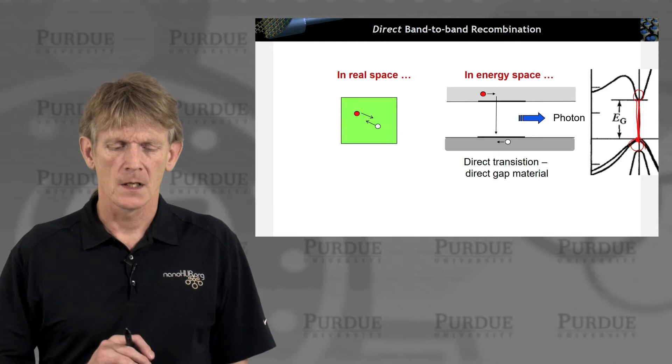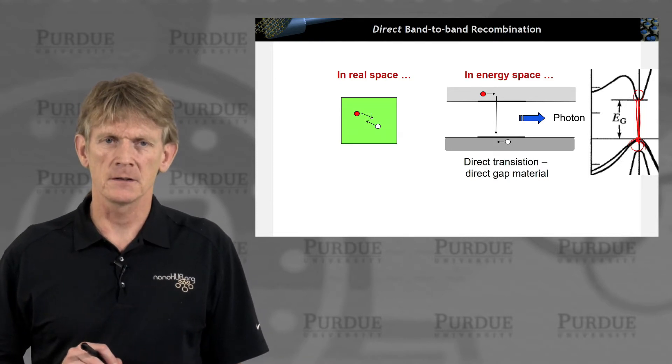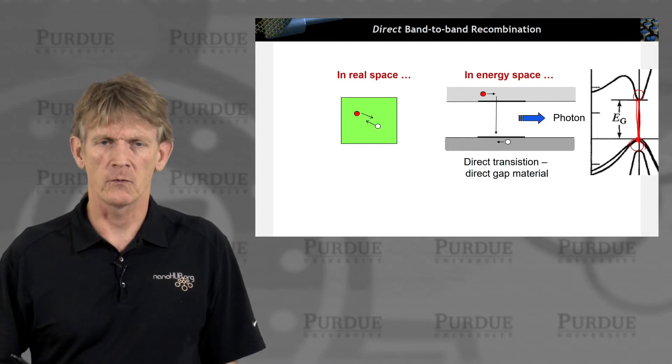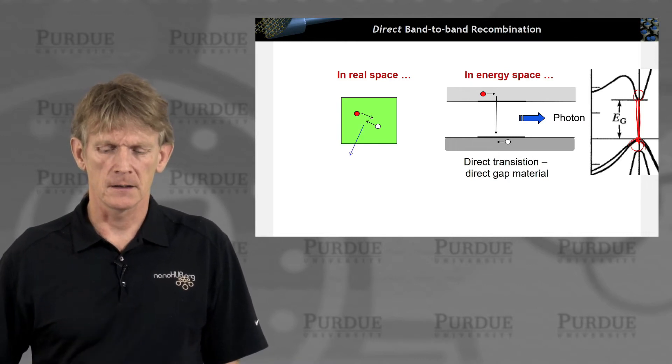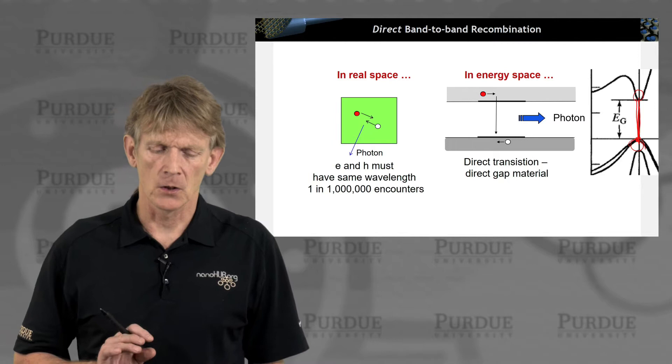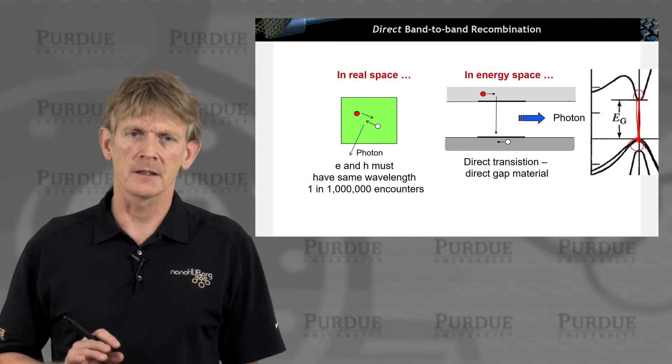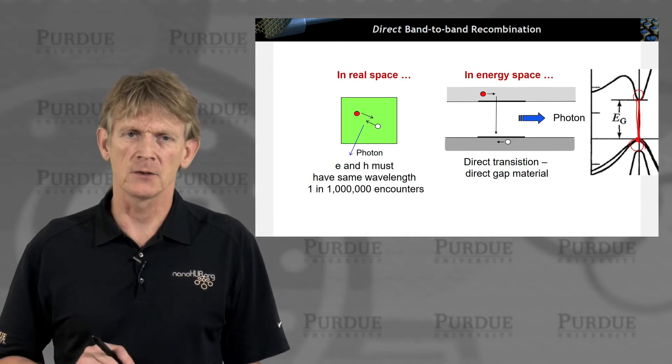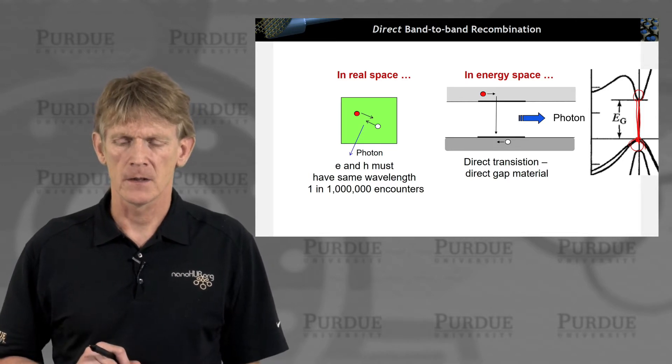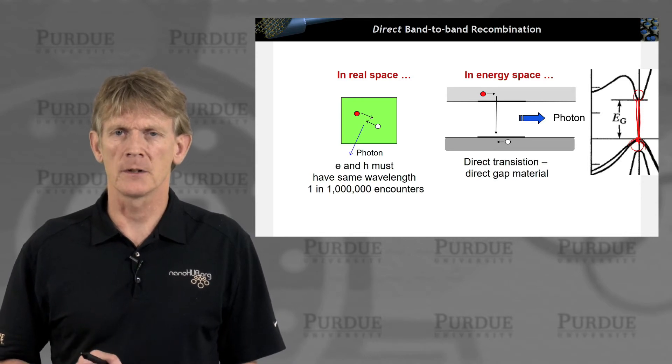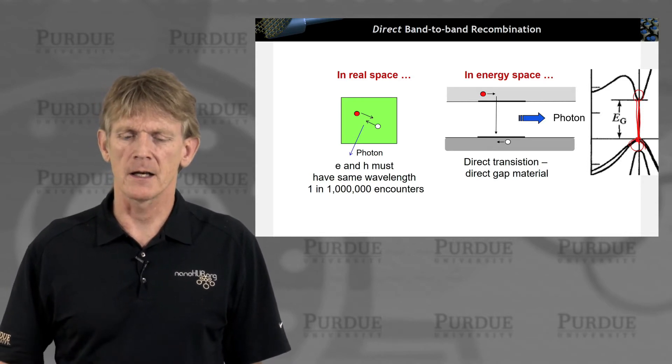In real space, it looks like this. There's an electron and a hole. They have to be spatially close, and they have to have the same type of wavelength in their quantum state, and they will emit a photon when they collide. So that's a one-in-a-million encounter. But remember, we have 10 to the 20 electrons zooming around that can recombine with a hole. So it's actually a very prominent recombination process if you have a direct gap material.